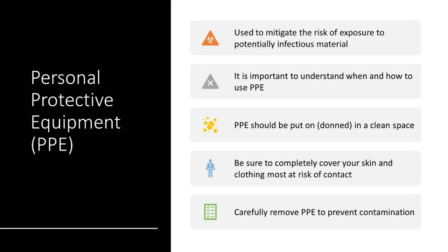Personal protective equipment, or PPE, is used to mitigate the risk of exposure to potentially infectious material in health care. It is important to understand when and how to use PPE and to understand its limitations. PPE must be used correctly. It should be donned in a clean space so as to reduce the chance of exposure of your skin or clothing to infectious material. It is good practice to ask a colleague to watch you don or to check your PPE before room entry to identify any potential areas of exposure. Common areas found exposed are the wrists or the nose if the face mask slips below the nose. When removing PPE, be careful not to inadvertently contaminate your skin or clothing — the front of the face mask, face shield, goggles, and front of the gown are particularly contaminated and must be very carefully removed.